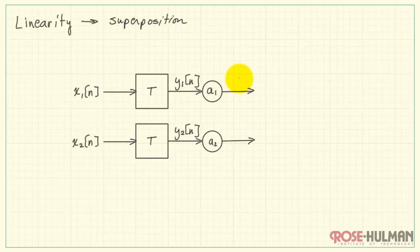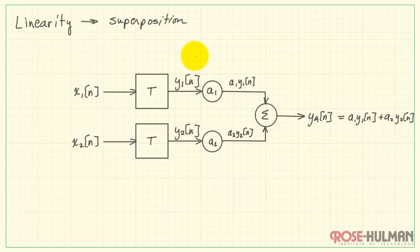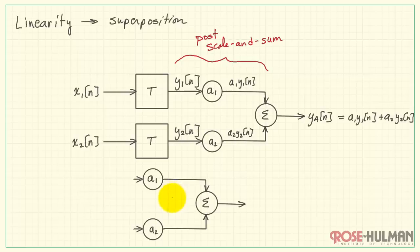Now let me multiply y1 by the scale factor a1 and similarly for y2. I'm going to add those two results together and let's call that y sub a of n. Now this scale and sum technique is happening after the system operates on x. So I'll call that the post scale and sum version of this.